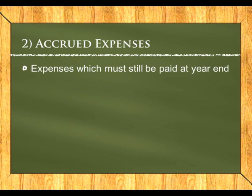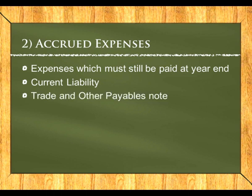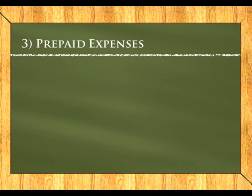Accrued expenses are expenses we must still pay at year end — we know about them but have not received an invoice to record them. For example, insurance owed at year end. We create a current liability called accrued expenses. The journal entry is: debit the expense account (e.g., insurance) for R5,000 and credit accrued expenses. This forms part of the trade and other payables note.